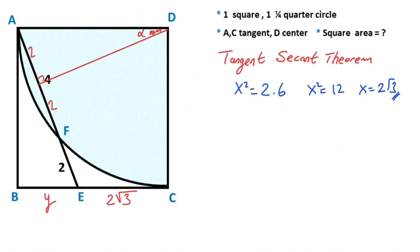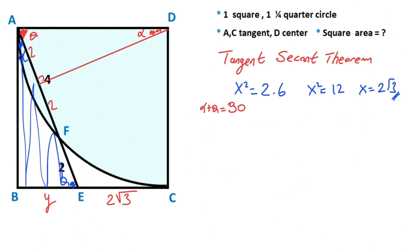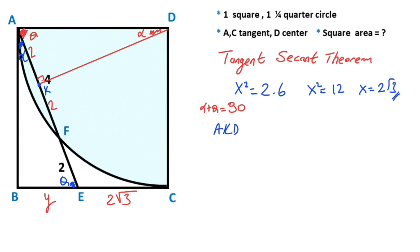Let's call this angle alpha and this one theta. You know that alpha plus theta equals 90 degrees. So angle BAE must equal alpha, and likewise angle AEB must equal theta. This means these two triangles have the same angles, so they are similar. Let's call this point K. Therefore, triangle AKD and triangle EBA are similar.